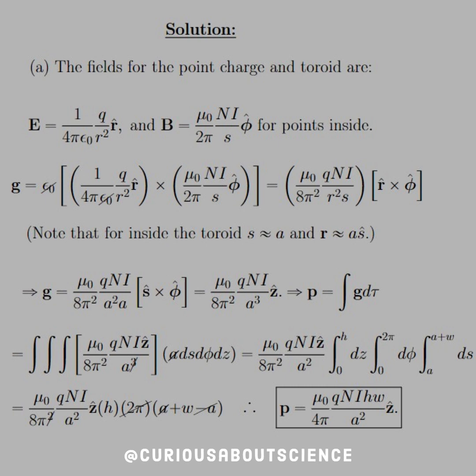For part A, we need to know that the fields for the point charge and toroid are given as E equals 1 over 4 pi epsilon naught, Q over R squared, R hat, and B equals mu naught over 2 pi, NI over S phi hat for points inside. So if we take the cross product for G, we take the constants out front, epsilon naught to cancel. It's pretty systematic at this point.